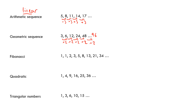With Fibonacci sequences, you need to recognise the type and be able to apply it. We add the two previous terms together: 1+1=2, 1+2=3, 2+3=5, 3+5=8, 5+8=13, 8+13=21. To find the next term after 21 and 34, I'd do 21+34=55.